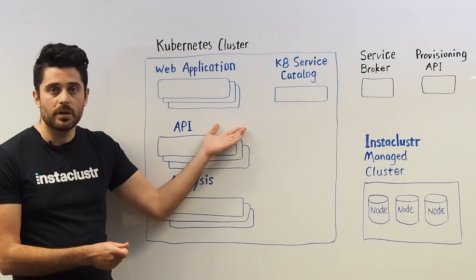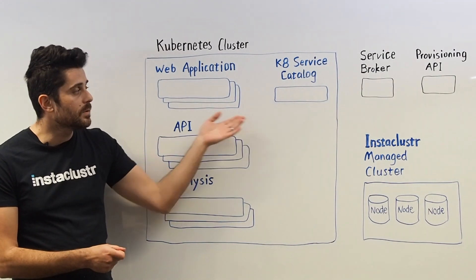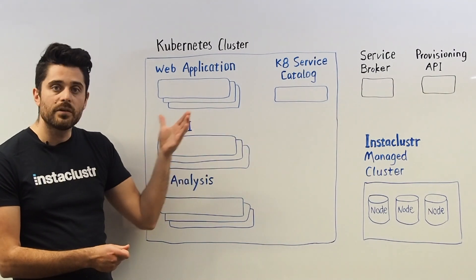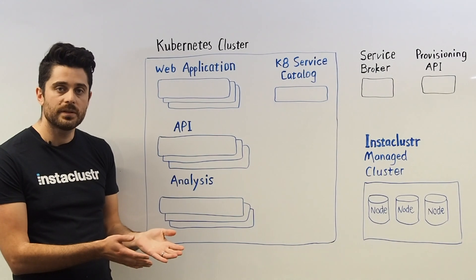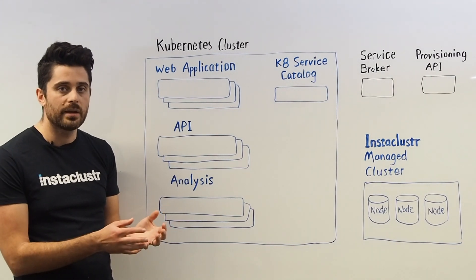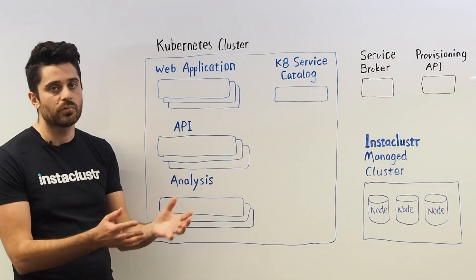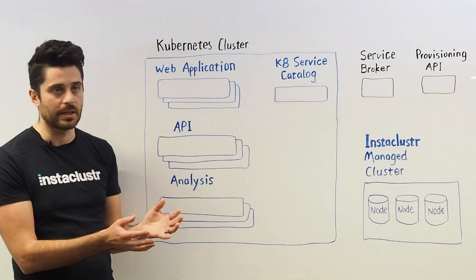Once you have selected one of the applications you'd like to use, it's a simple matter of making a request to create one of those service instances along with any required information such as parameters, names, and service details.